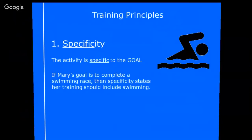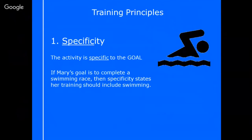The first one is specificity. And this, although it sounds like an absolute mouthful, is basically saying that the activity that your client needs to be doing — the training activity that they're doing — needs to be specific to the goal.